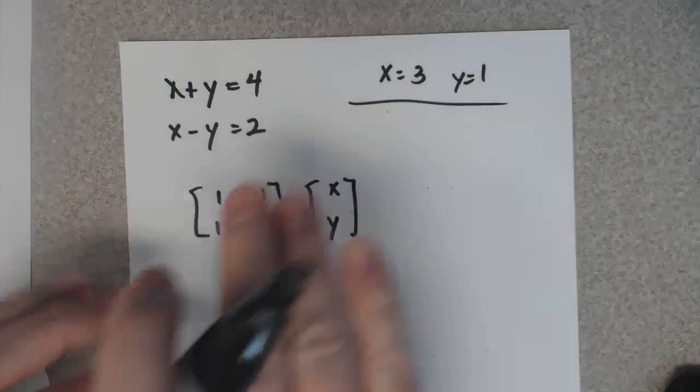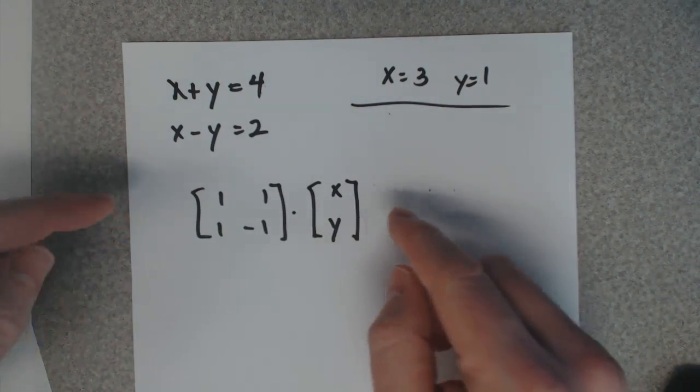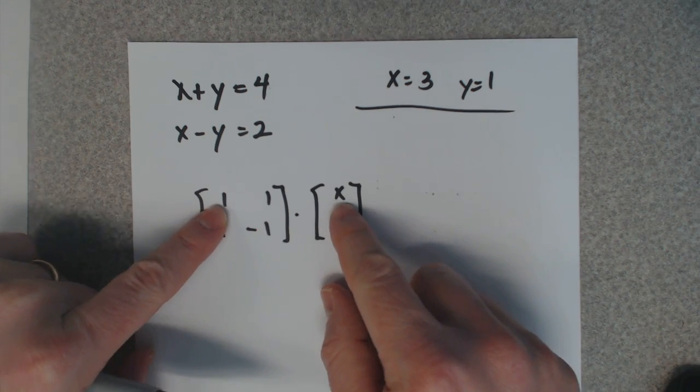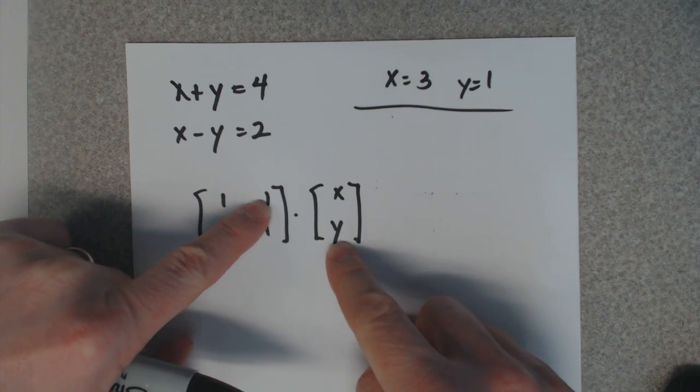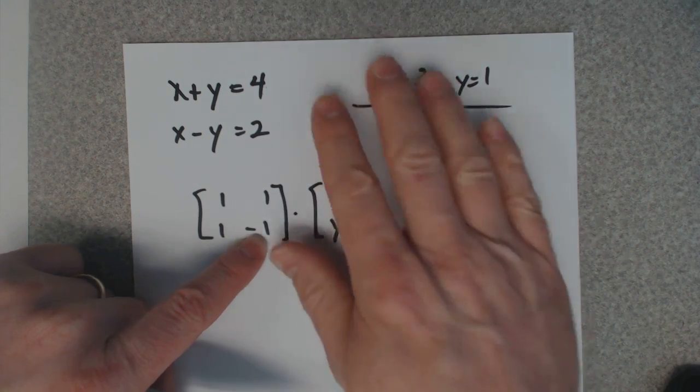If you don't remember how to multiply two matrices: one times x plus one times y, one times x plus negative one times y.